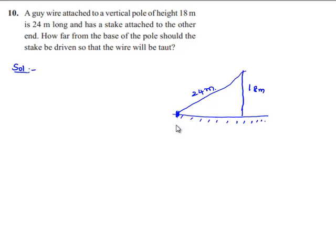So let the point where the stake is attached be A, and the point of contact of the vertical pole with the ground be B, and the height of the vertical pole at the top be C.